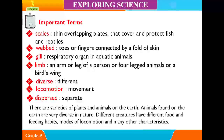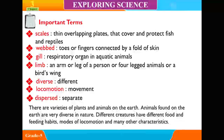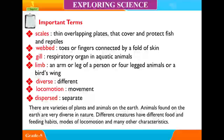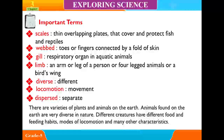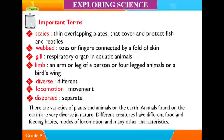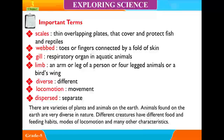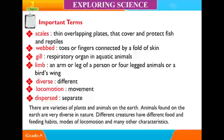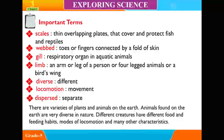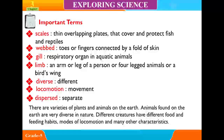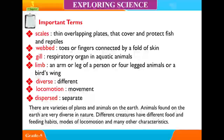There are varieties of plants and animals on the earth. Animals found on the earth are very diverse in nature. Different creatures have different food and feeding habits, modes of locomotion, and many other characteristics.